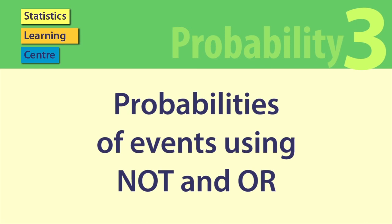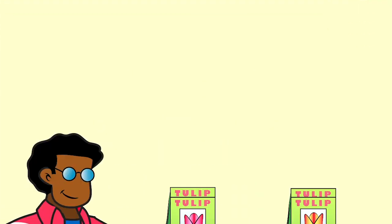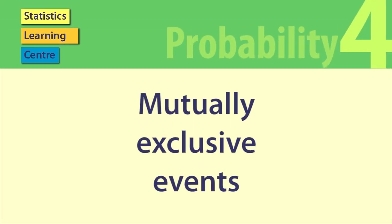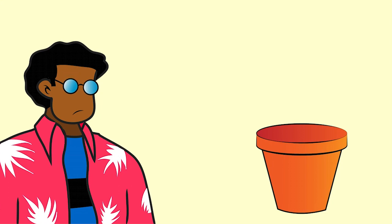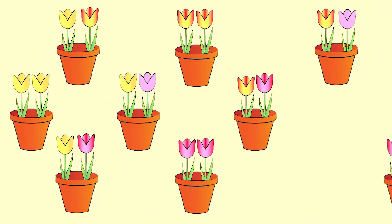In the third video we look at the probability of combinations of events illustrated by Sam's tulip purchases. And in the next video we continue with Sam's tulips and explore the idea of events that are mutually exclusive or not.